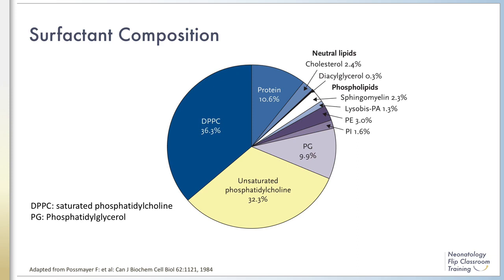Almost 70% of surfactant is composed of phosphatidylcholine, with approximately half being saturated and the other half being unsaturated. 10% of phospholipids are made up of phosphatidylglycerol, with another 13% composed of neutral lipids like cholesterol and diacylglycerol, and phospholipids like sphingomyelin.